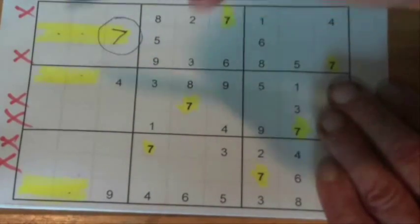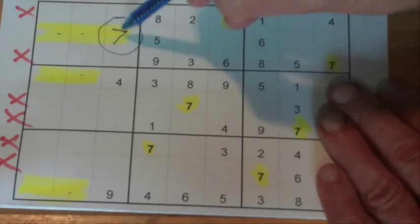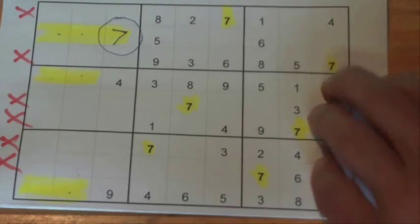And that stops you having a 7 there, stops you having a 7 there, and the only one left is going to be that cell there, which is your 7.